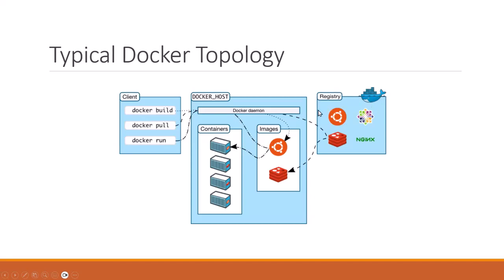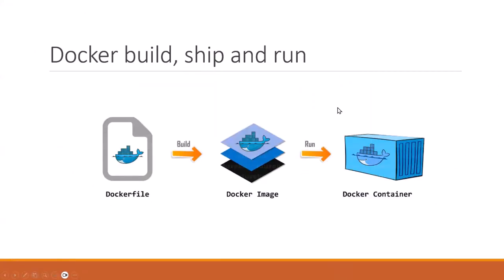Docker pull brings images from the registry to your Docker host machine. Docker build creates the image and pushes it to the registry. Build is the first command to maintain your Docker registry. Pull wherever the Docker engine is running allows you to get the image, and docker run runs the containers. This is the three-phase topology: client side, registry, and Docker host. The build process is simple — you write a Dockerfile and create your own image, just like any programming language.